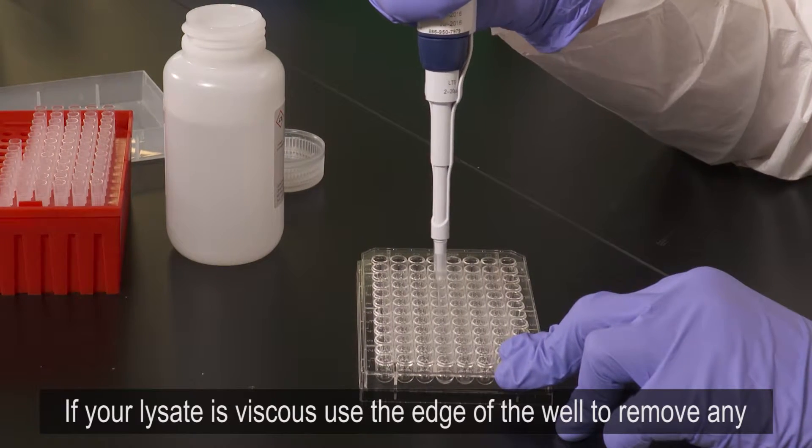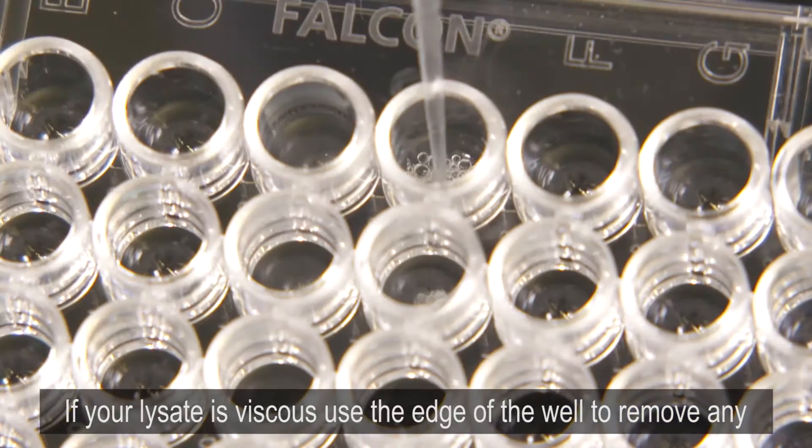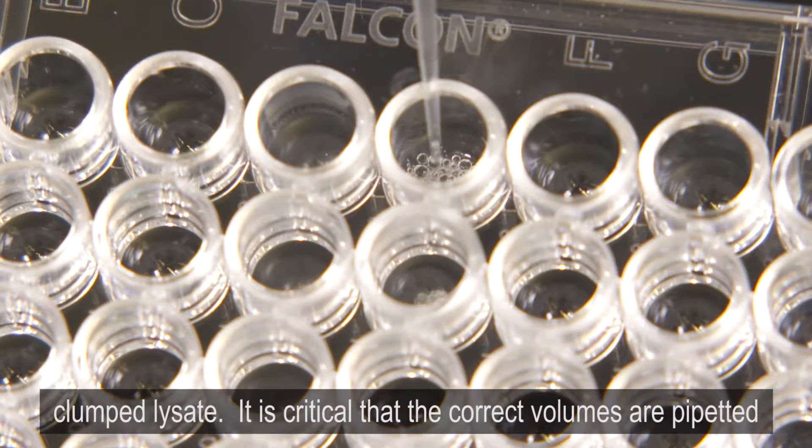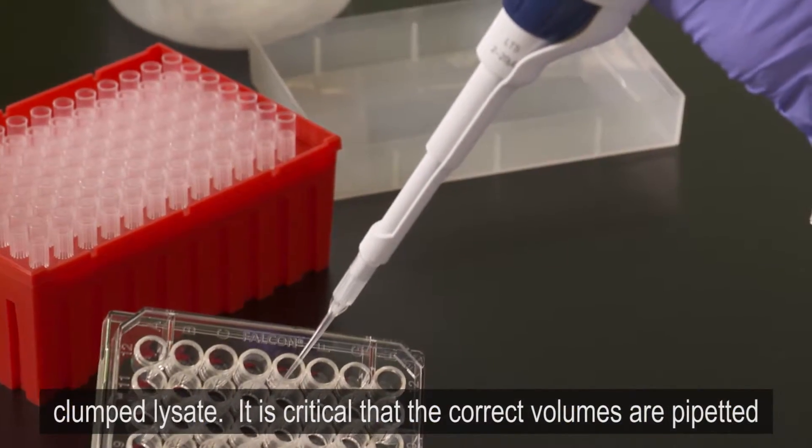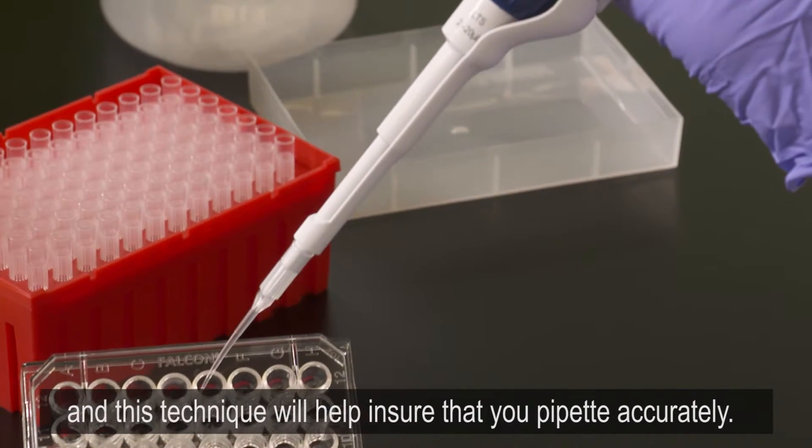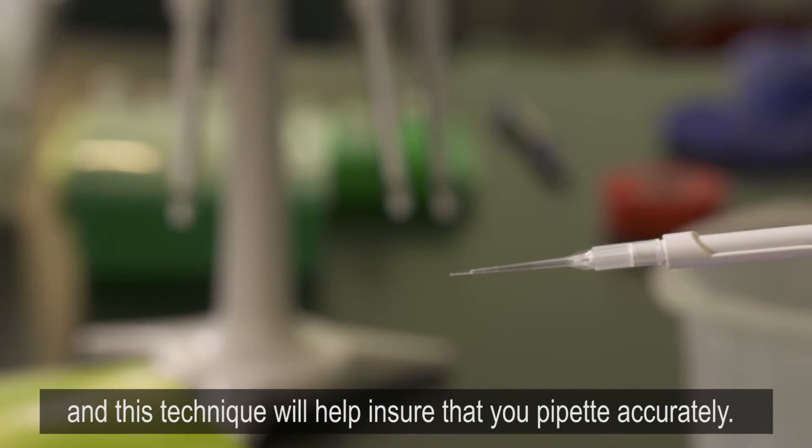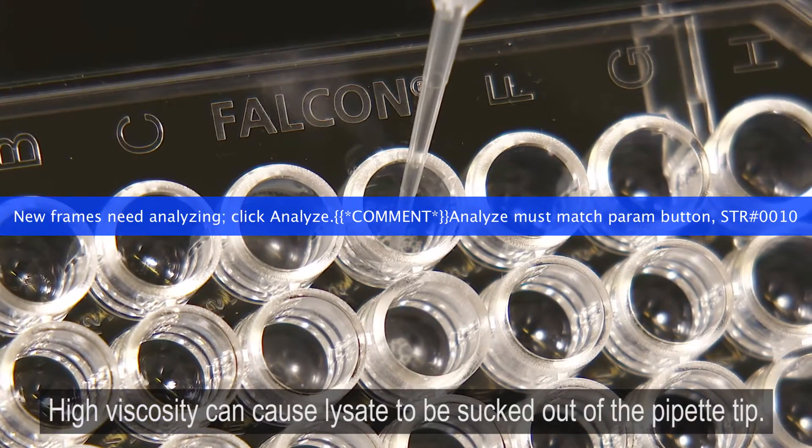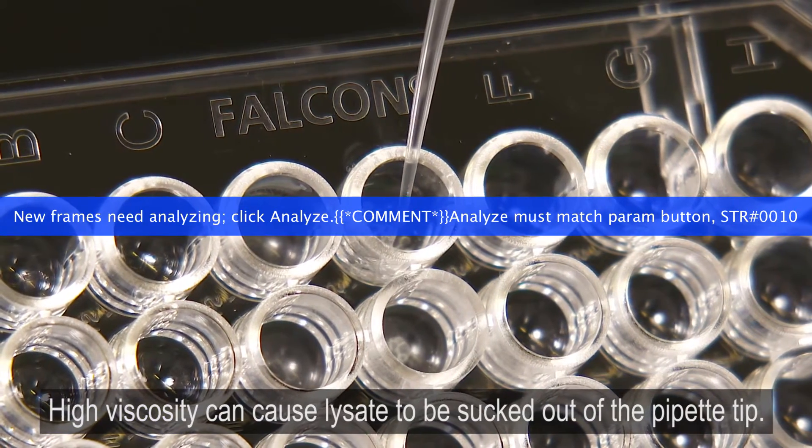If your lysate is viscous, use the edge of the well to remove any clumped lysate. It is critical that the correct volumes are pipetted, and this technique will help ensure that you pipette accurately. High viscosity can cause lysate to be sucked out of the pipette tip.